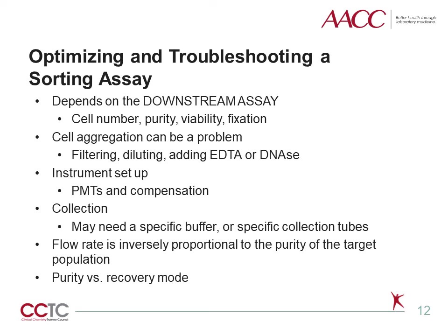How the cells are collected can also have a big impact on whether the sort is successful. Some cells are fragile and need a buffer to land in to remain viable. Some cells stick to the side of the tubes, which reduces recovery. Using polypropylene or glass collection vials instead of polystyrene may alleviate some of these problems. Sorting directly into the downstream assay's extraction buffer or fixative can also be very beneficial. PMTs must be optimized for the antibodies chosen and compensation applied. In general, the lower the flow rate, the higher the purity and efficiency of a sort, but this comes at the expense of increased sorting time. There are also multiple sorting modes that can either increase recovery at the expense of purity, or increase purity at the expense of recovery, relating to the possibility of coincidence of wanted and unwanted cells in the same or consecutive droplets.